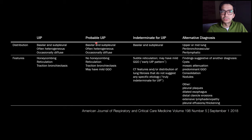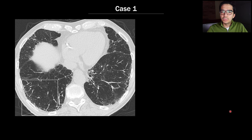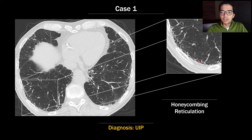Let's look at some examples. In the first case, axial and sagittal images show subpleural or peripheral predominant fibrosis that is basilar predominant on the sagittal. Zooming in, you can see cystic air spaces in the periphery of the lung — this is honeycombing with reticulation. So this patient has subpleural and basilar fibrosis with honeycombing, making the diagnosis UIP. Importantly, there are none of the alternative diagnosis features such as ground glass opacity, nodules, consolidation, or cysts.